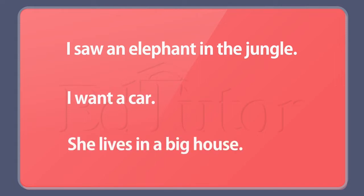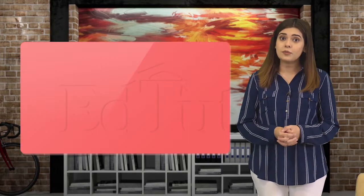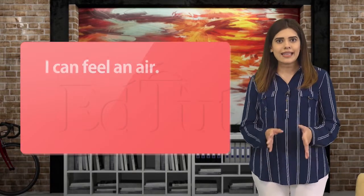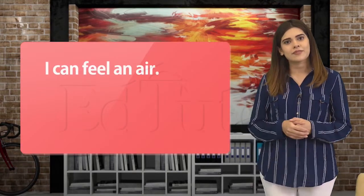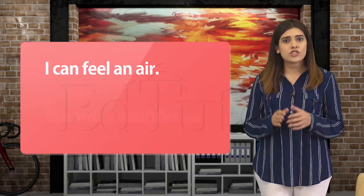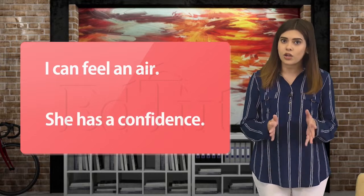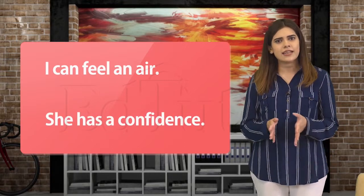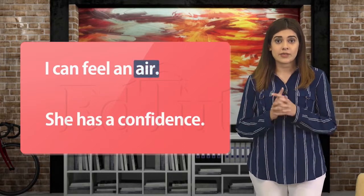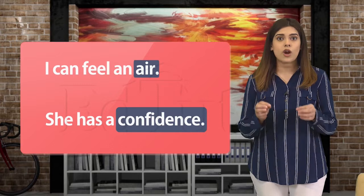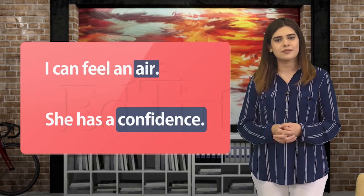She lives in a big house. But if the nouns are uncountable, we do not use indefinite articles. For example: 'I can feel an air' or 'She has a confidence' — these are incorrect because 'air' and 'confidence' aren't countable.